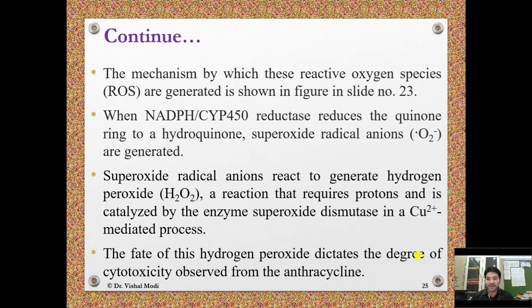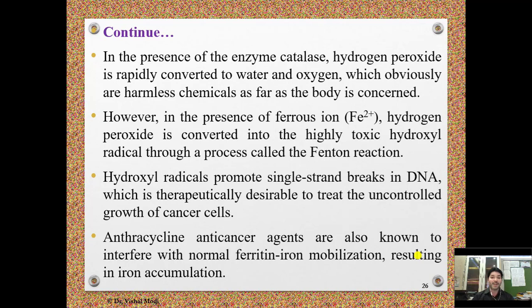When NADPH cytochrome P450 reductase reduces the quinone ring to hydroquinone, superoxide radical anions are generated. Superoxide radical anions react to generate hydrogen peroxide in a reaction requiring protons, catalyzed by superoxide dismutase. The fate of this hydrogen peroxide dictates the degree of cytotoxicity: in the presence of catalase enzyme, hydrogen peroxide is rapidly converted to harmless water and oxygen. However, in the presence of ferrous iron, hydrogen peroxide is converted to the highly toxic hydroxyl radical through the Fenton reaction.